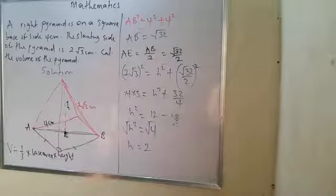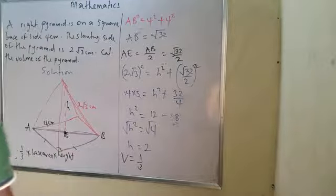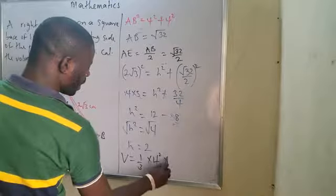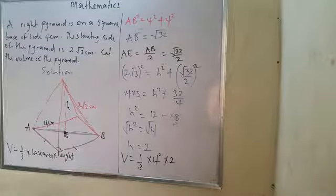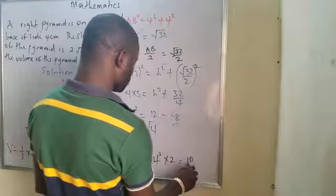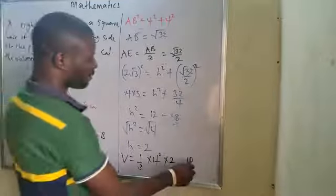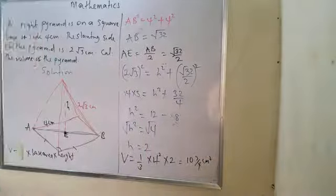Since I now have my height H equals 2, I can find the volume. Volume of pyramid equals 1 over 3 multiplied by 4 squared multiplied by 2. That gives 1/3 multiplied by 16 multiplied by 2, which equals 32 over 3 — approximately 10 and 2/3 — centimeters cubed. That is my volume.